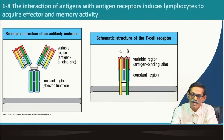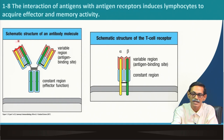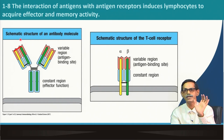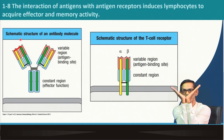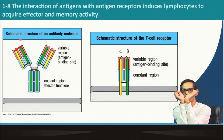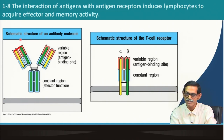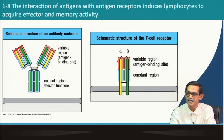An antibody has two binding sites — one on each arm — so one antibody can bind two antigens at a time. However, the T cell receptor can bind only one antigen at a time.